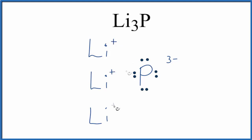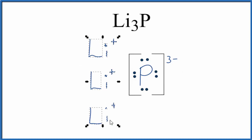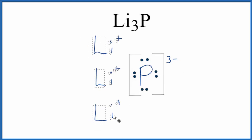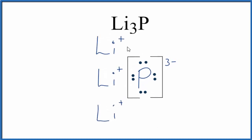We don't write the one though, and because the electrons were transferred — not shared like in a covalent bond — we should put brackets around the phosphorus atom. Often you'll see brackets around each lithium as well. So we have a negative ion and these positive ions; opposite charges attract, and that's what forms the ionic bond between the lithiums and the phosphorus. So we have a Lewis structure now for lithium phosphide, Li3P.